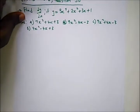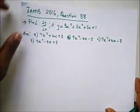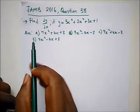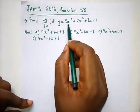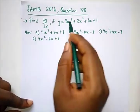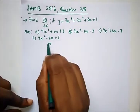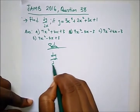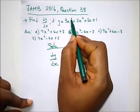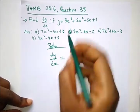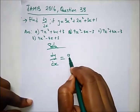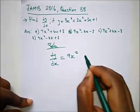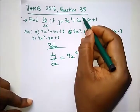We have another question from JAMB 2016 Question 38. It says: if y is equal to this, find dy/dx. This is also straightforward. We have 3 multiplied by 3 which gives 9x^(3−1), giving us 9x².